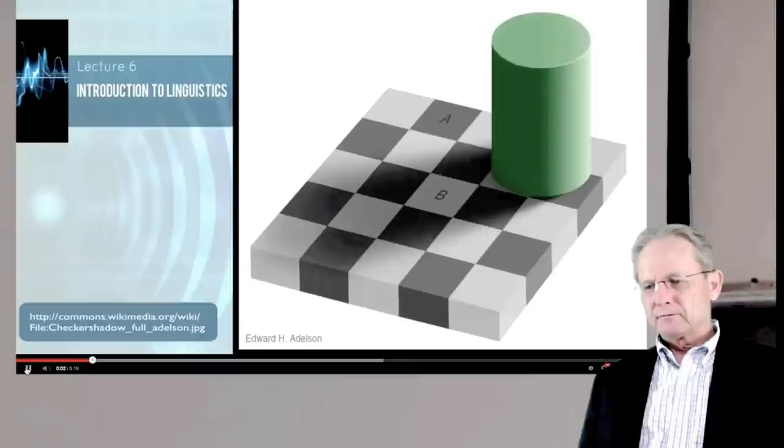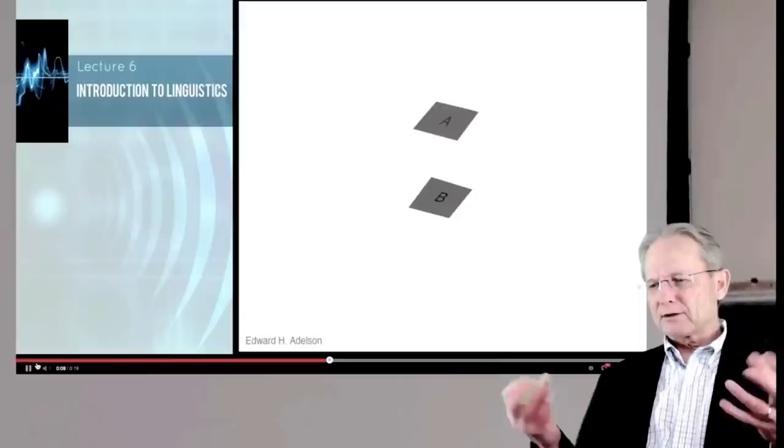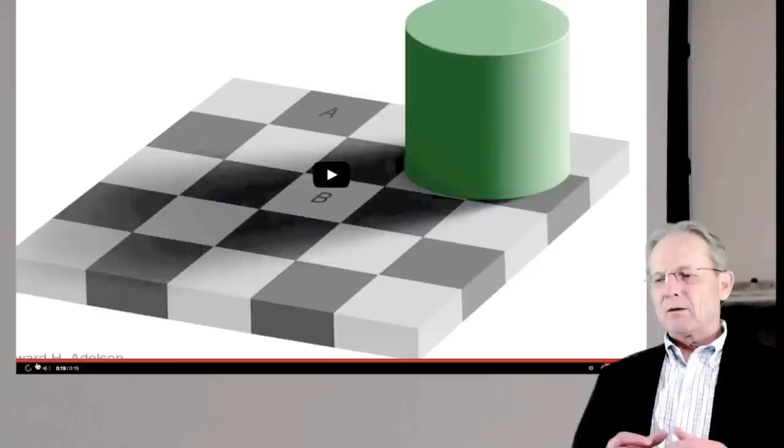So there goes one piece, and then the rest go, and then only at the end do we see that, in fact, squares A and B are the same color.